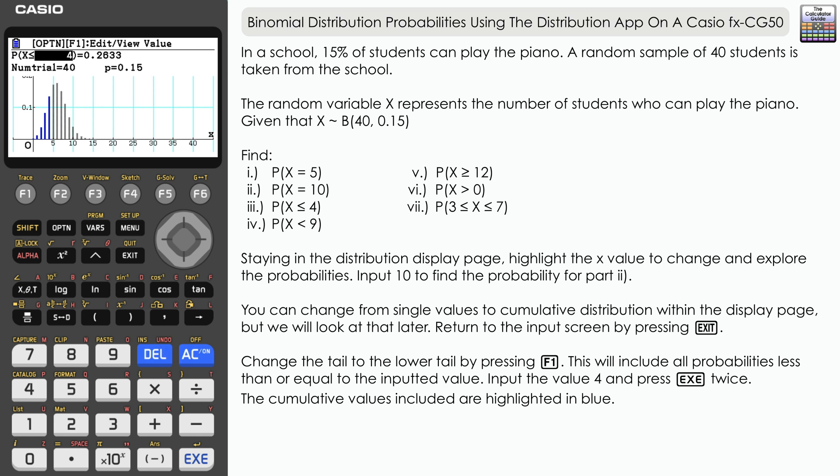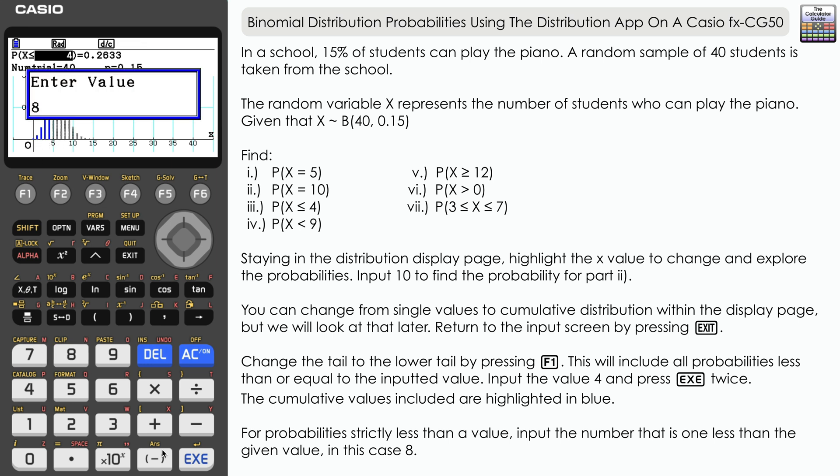Probability 4 is that X is less than 9, so it's strictly less than. So what we really want to include here is values from 0 to 8. So we want to enter the probability X is less than or equal to 8 and press execute. So that's just something to look out for. Remember that the probability includes the value that you're inputting.